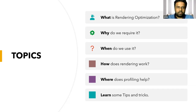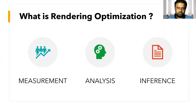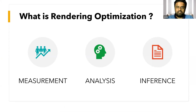These are the topics we're going to cover today. We will mainly focus on six important questions: what, why, when, how, where — and learning from all these questions. So what is rendering optimization? When we create content and need to get maximum performance, we have to measure what it's performing at — we analyze and infer from the measurement. After analysis, the inference is where we execute. We infer what went wrong or what we learned from the analysis, and then we execute it. That's the meaning of rendering optimization.